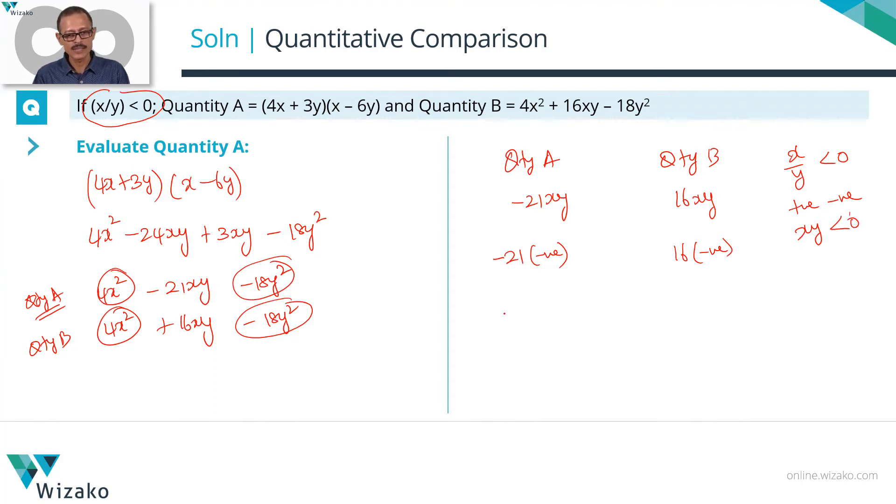-21 into a negative number is a positive number. We do not know its value but we know it is positive. 16 times a negative number is a negative number. We do not know its value but we know it is negative.